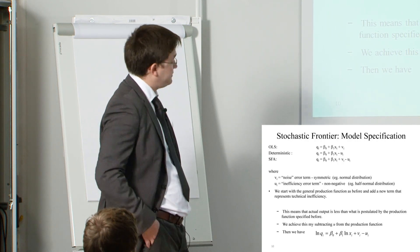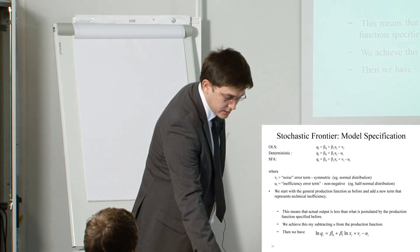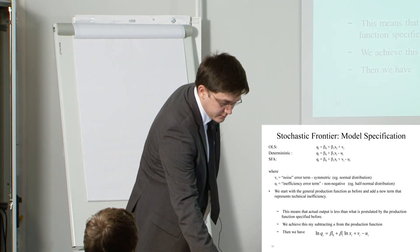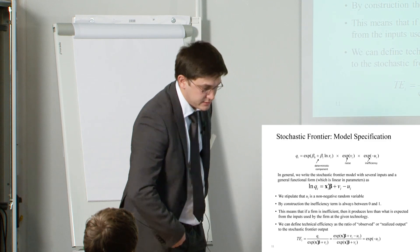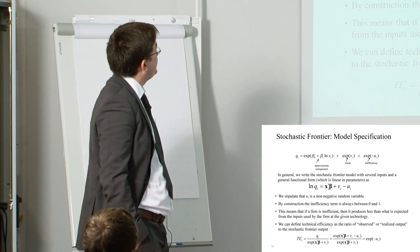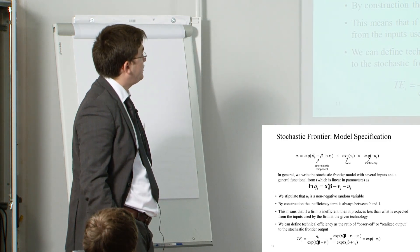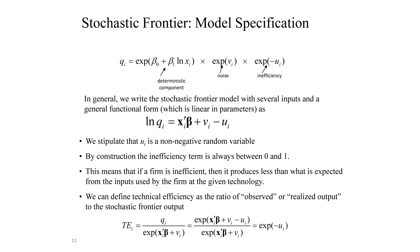What's good about stochastic frontier analysis is it takes into account the measurement error and also the technical efficiency. For simplicity we use the Cobb-Douglas production function. We have the deterministic component, the noise, and the inefficiency term. We use maximum likelihood estimation to calculate our model and the technical efficiencies.